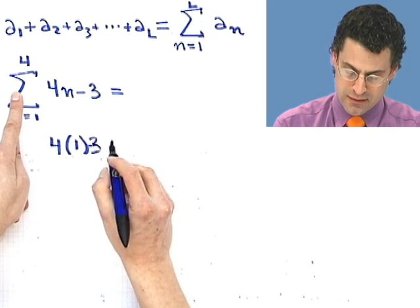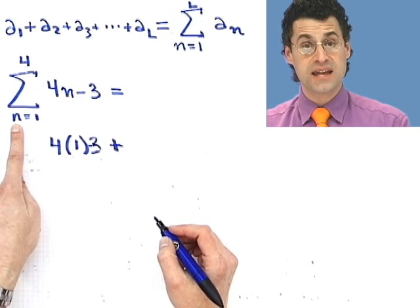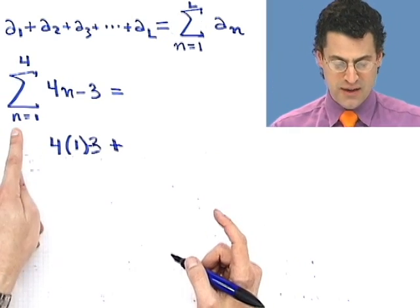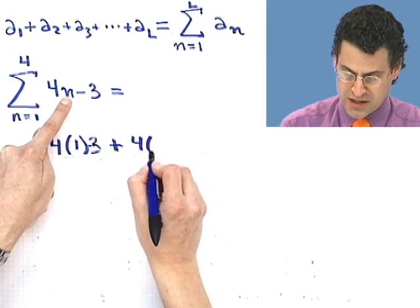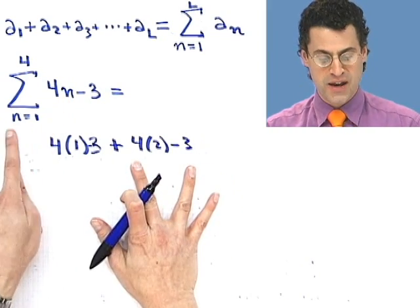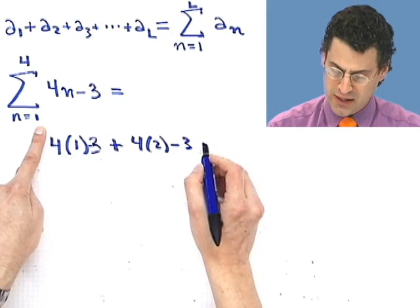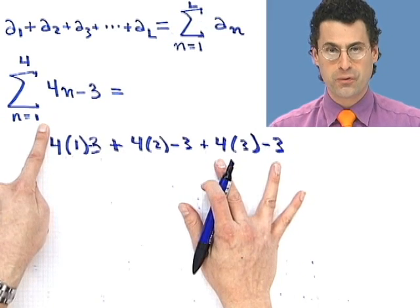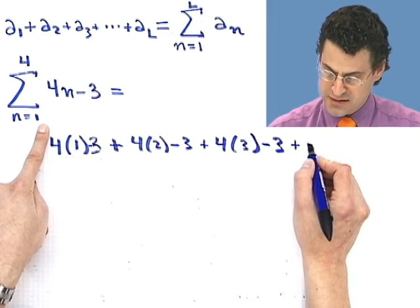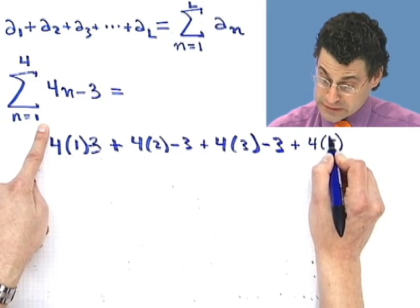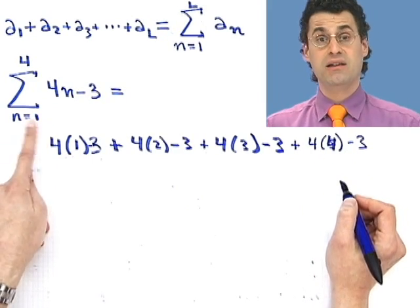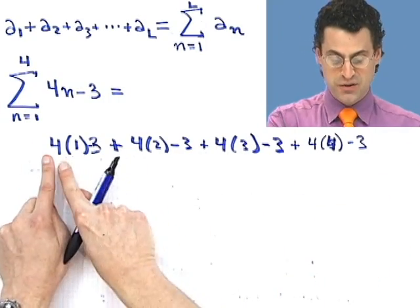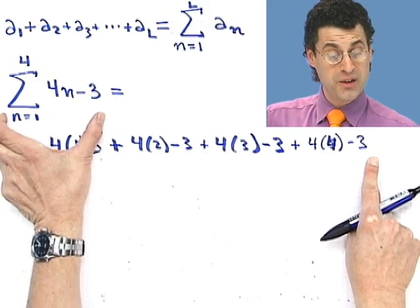So that's what happens the very first term when n equals 1. Now what do I do? I add what I get when I up the index to n equals 2, always keeping my eye on the fact that I'm only going up to 4. So if n equals 2, I plug in 2 for n. So I see 4 times 2 minus 3. That's the next term. Then I up the index again to n equals 3, and I have 4 times 3 minus 3. And then I up the index again to n equals 4, and I plus, because I'm adding 4 times 4 minus 3. And now I let n equal 5 and go, whoop, wait, stop. I'm only going up to 4. So that stops the process.